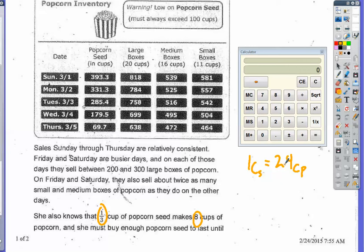From the chart: a large box has 20 cups of popcorn, a medium box has 16 cups, and a small box has 11 cups. I'll need to figure out how many total cups of popcorn are needed and then convert that to cups of seed by dividing by 24 at the end.